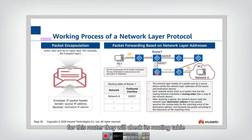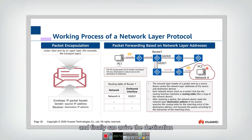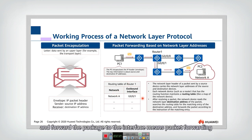Similarly for this router, they will check its routing table and find that this packet with the destination IP should go from this link, go through this link, and finally arrive at the destination. Checking the outgoing interface and forwarding the packet to that interface means packet forwarding — this is the most important function in network layer protocol.